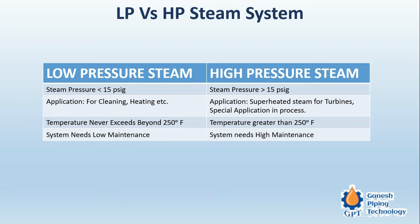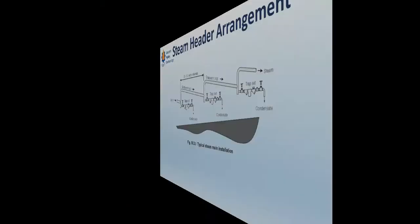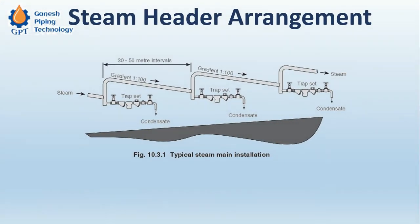For low pressure steam, temperature never exceeds 250 degrees Fahrenheit. For high pressure steam it is greater than 250 degrees Fahrenheit. Since the pressure and temperature are not that high, low pressure systems need lower maintenance, while high pressure systems require more maintenance.